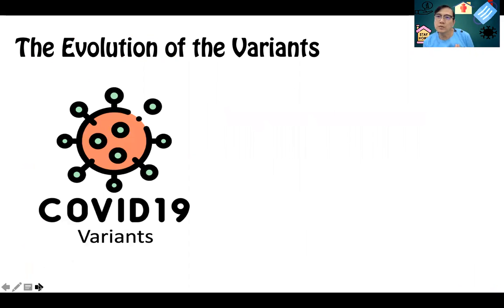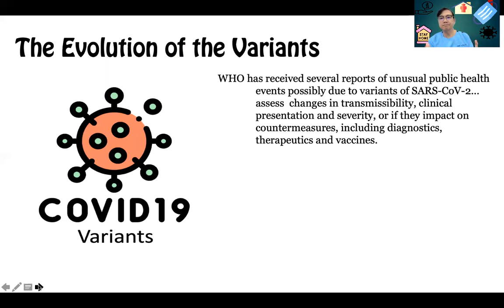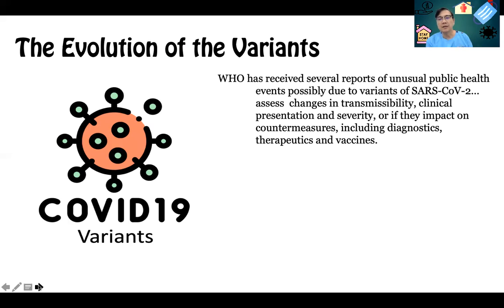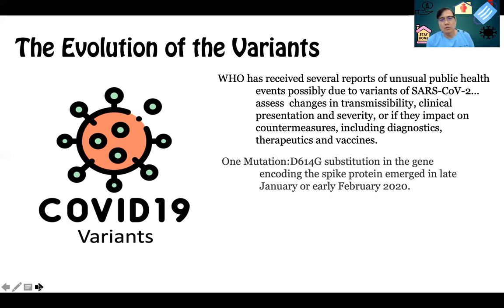SARS-CoV-2 is the strain that causes COVID-19. Over time, SARS-CoV-2 develops variants, and it's the World Health Organization that gathers all this information. The WHO then assesses changes in a new variant's transmissibility, clinical presentation, and severity. They also gather information on whether the new variant impacts countermeasures, including diagnostics, therapeutics, and the efficacy of available vaccines.